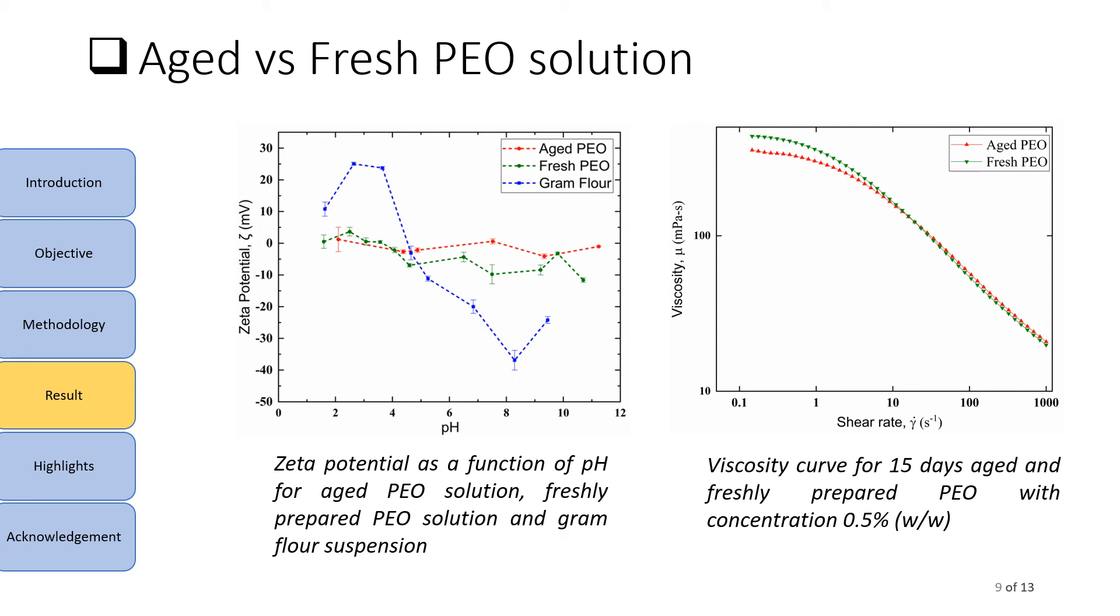The second plot here compares the viscosity of aged and freshly prepared PEO solution with concentration 0.5% by weight in water as a function of shear rate. It can be seen that the zero shear viscosity decreases on aging. Some literature suggests that it happens due to conformational changes in polymeric molecules on aging. They shift from coiled conformation towards stretched conformation, and stretched conformation of polymer also favors the polymeric bridging.